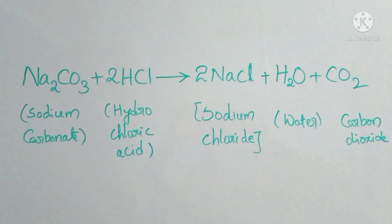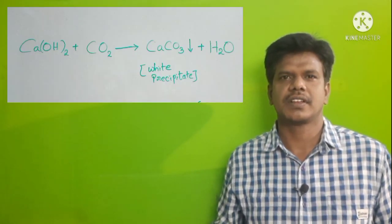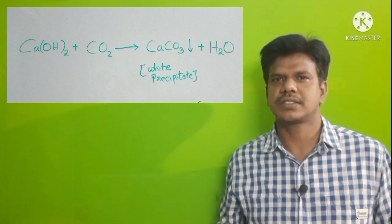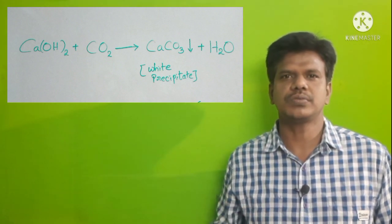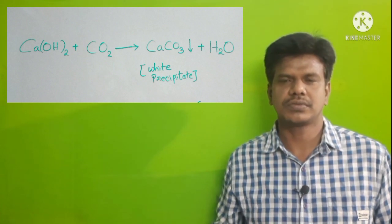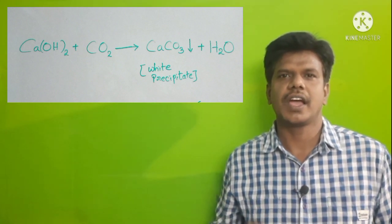The chemical reaction is: HCl + Na2CO3 → NaCl + H2O + CO2 gas. The CO2 gas is then passed through calcium hydroxide solution, where: Ca(OH)2 + CO2 → CaCO3 + H2O.